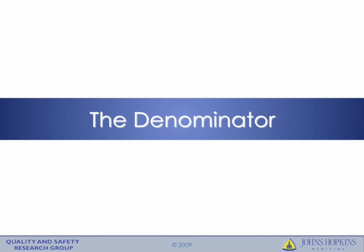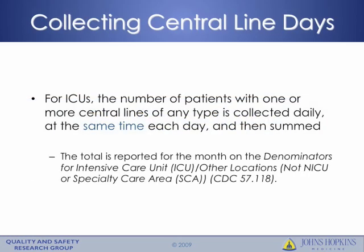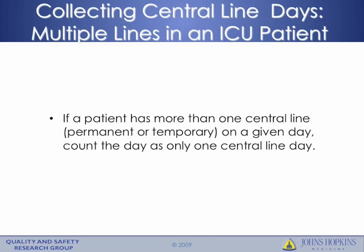Now we'll discuss how to determine the denominator. For ICUs, the number of patients with one or more central lines of any type is collected daily, at the same time each day, and then summed. This total is reported for the month on the denominators for intensive care unit and other locations form, CDC form 57.118. An important component of the definition for central line days in adult ICU patients is that if a patient has more than one central line — either permanent or temporary on a given day — the day is counted as only one central line day. So if a patient has a hemodialysis catheter and a non-tunneled subclavian central line, that is considered one catheter day, not two, for the purpose of NHSN reporting.